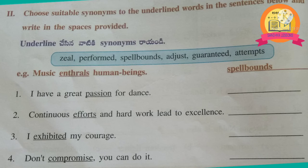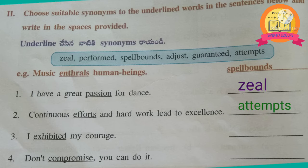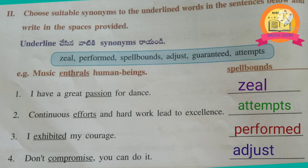2nd Roman: choose suitable synonyms for the underlined words in the sentences given and write in the space provided. 1st one: I have a great passion for dance. 2nd one: Continuous efforts and hard work lead to excellence – efforts. 3rd one: I exhibited my courage – exhibited. 4th one: Don't compromise. You can do it – compromise.